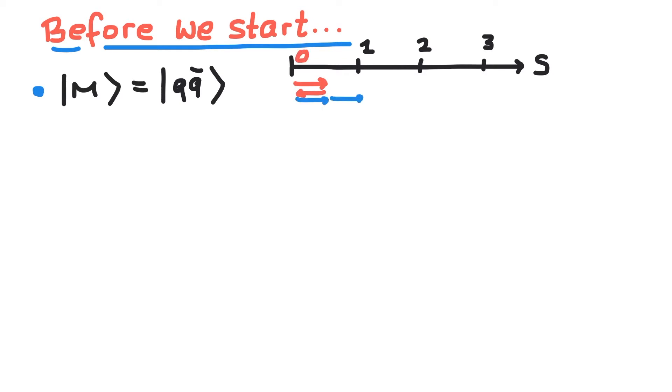First, let's talk about some preliminaries. Mesons consist of a quark and an antiquark, each having a spin one-half. These two quark spins couple to either spin one or spin zero. The meson's total angular momentum J can take on values between the absolute value of L-s and L+s, where L is the angular momentum between the two quarks.